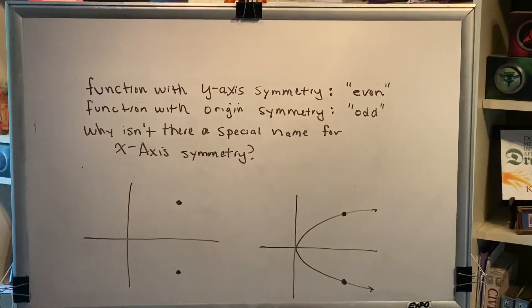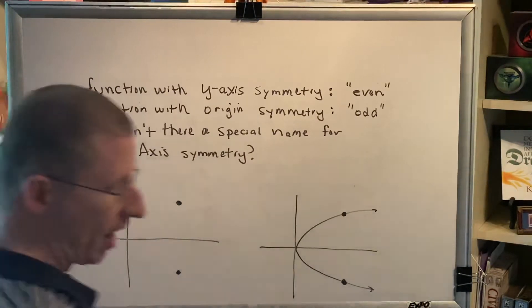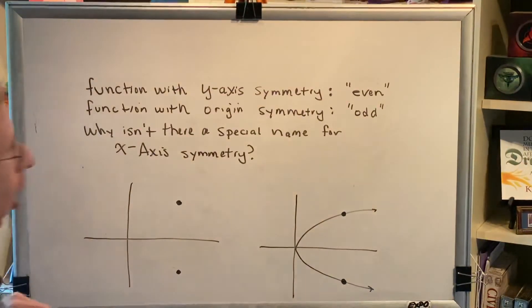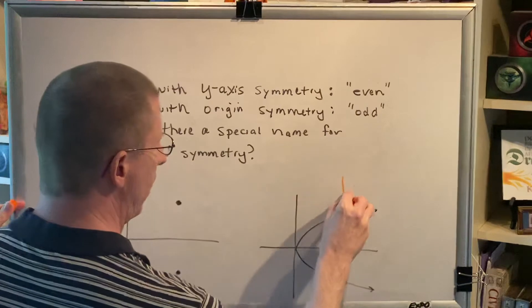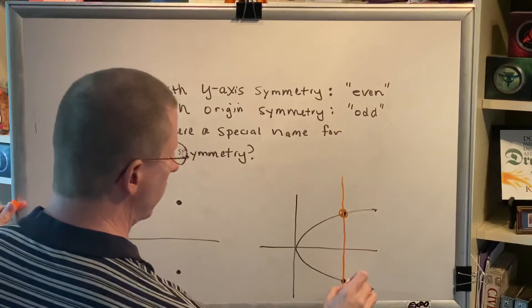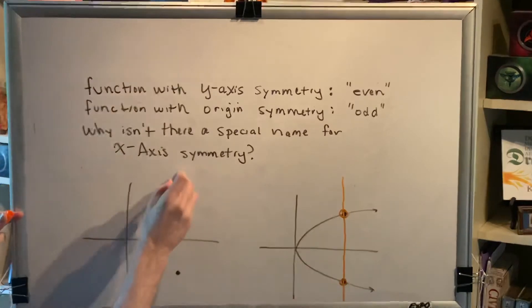There's just one problem. That's not a function. A function has to pass the vertical line test, and if you are able to draw a vertical line that intersects the graph of a relation at more than one point, then it is not a function.